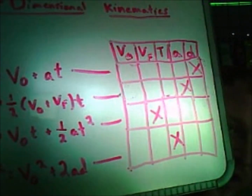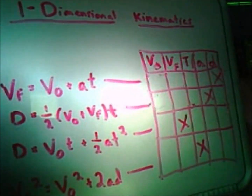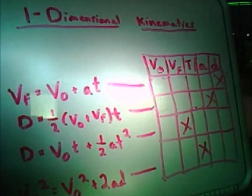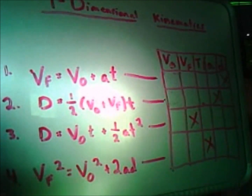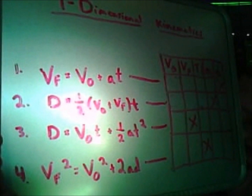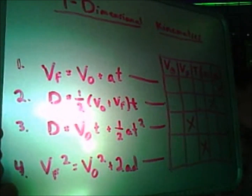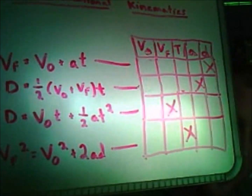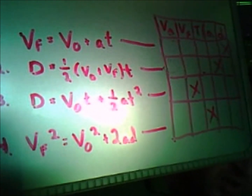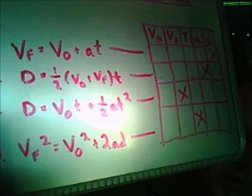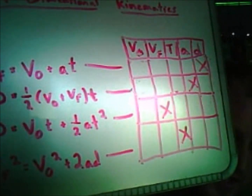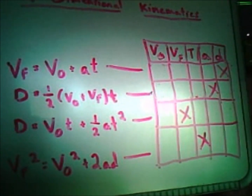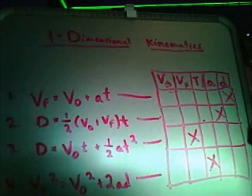I have a graph that shows which variables you need and which you don't have. For equation one, displacement d is not present. For equation two, acceleration a is not present. Write these down because these one-dimensional kinematic equations will help you solve for projectile motion in three dimensions. Equation three does not contain final velocity. For equation four, final velocity is squared, and you don't even need to know the time — only the distance, acceleration, and initial velocity.